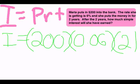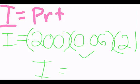Now what we do is multiply these numbers together. When you multiply them, you get that the simple interest equals $24.